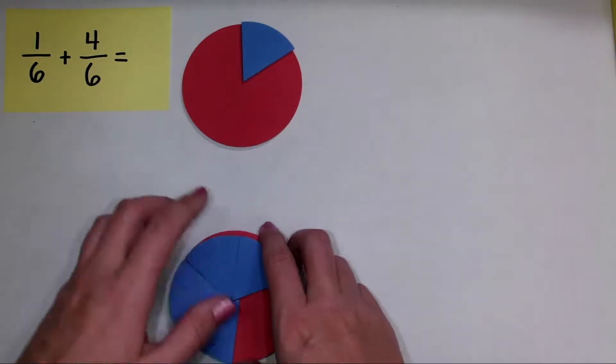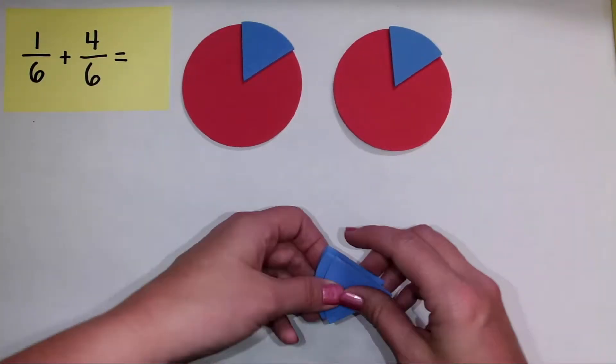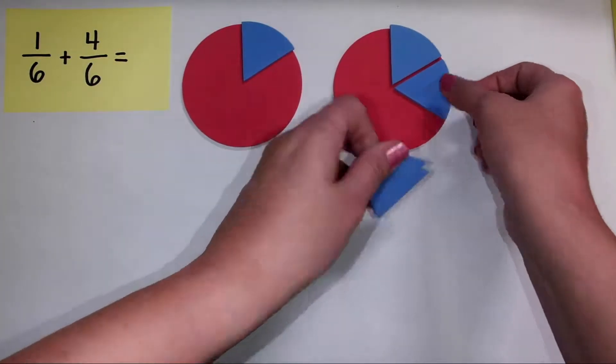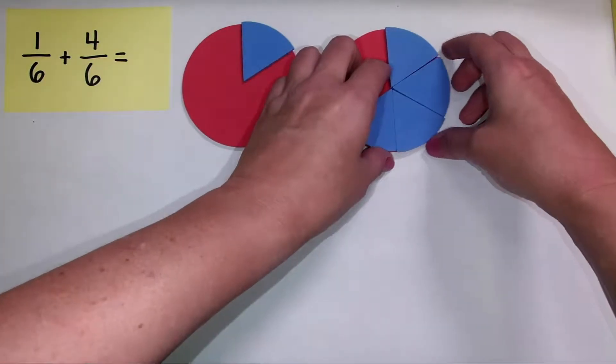and then we are going to add four sixths. So here I have a whole, and within that area I'm going to show four of the six equal parts. So I'll go ahead and get them out here and get them nicely arranged.